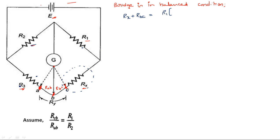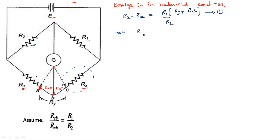Our aim is to calculate RAB and RBC. From the circuit, the total resistance from A to C is RAB + RBC = RY. This is our first assumption. The second assumption is RBC/RAB = R1/R2. Adding 1 on both sides: RBC/RAB + 1 = R1/R2 + 1, which gives (RBC + RAB)/RAB = (R1 + R2)/R2. Therefore, RAB = R2·RY/(R1 + R2).